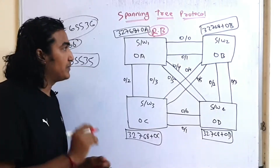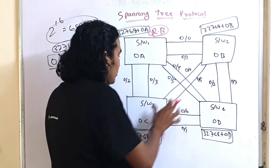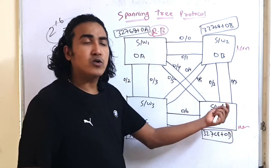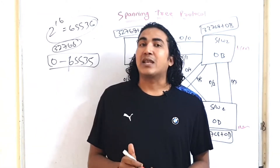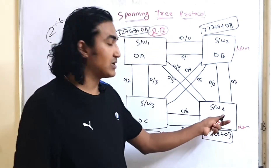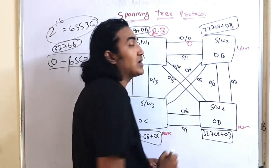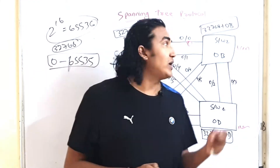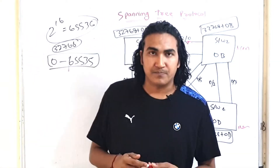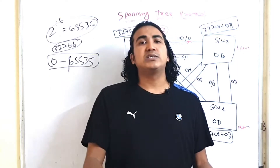There are two rules in STP to keep in mind. First: on a single non-root bridge switch (Switch 2, Switch 3, Switch 4), there can be a maximum of one RP. Second: on a single segment, there can be only one DP. These two rules are fundamental before starting the STP election.